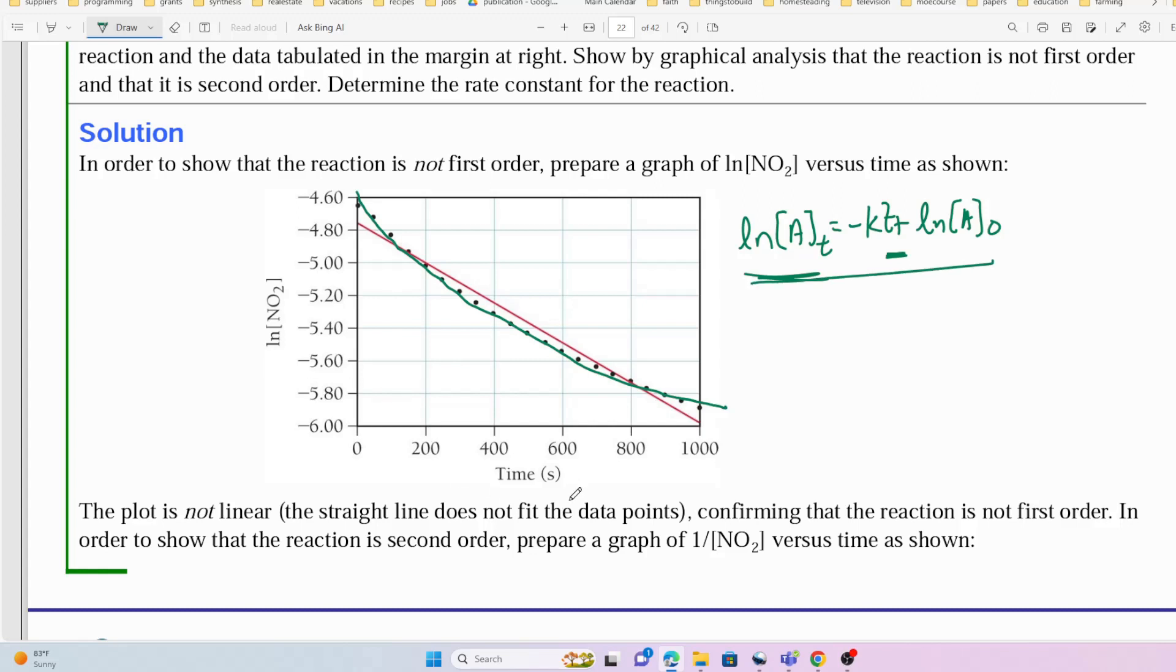So since it doesn't fit the first order integrated rate law, we need to confirm that it is in fact second order. In order to demonstrate that the reaction is second order, we need to prepare a graph of 1 over the NO2 concentration versus time.